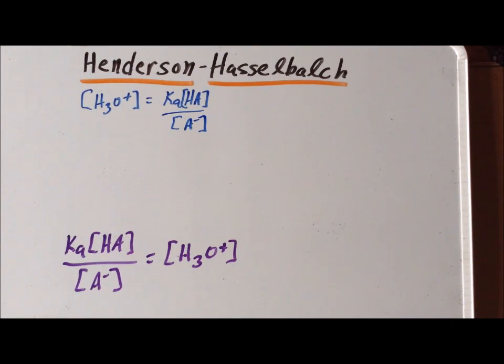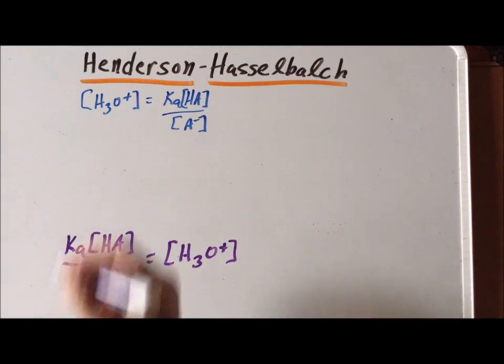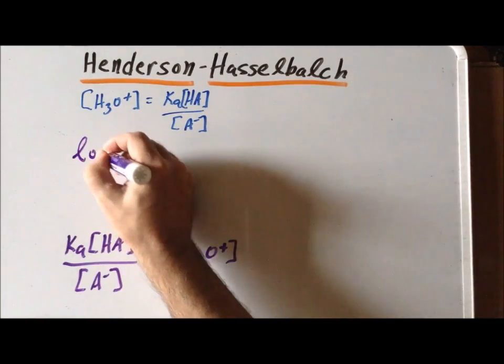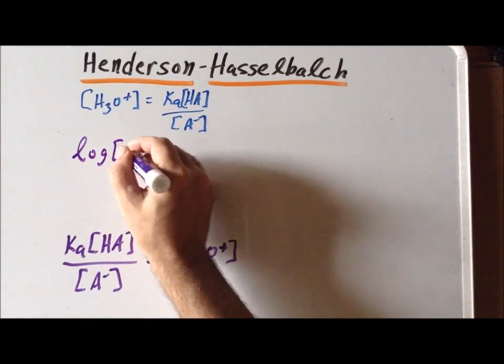Our next step is to take the logarithms of each side. So that gives me, for the left-hand side, I have the log of H3O plus.